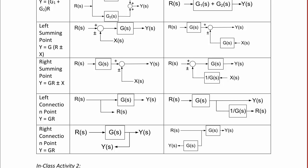We could also have a left connection point, and that just means that y is equal to g times r, or a right connection point here, where y is equal to g times r.